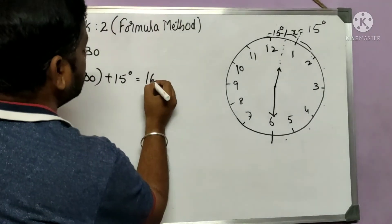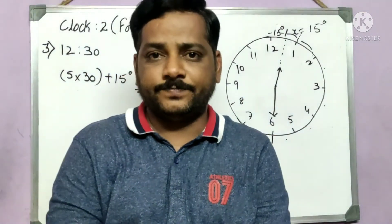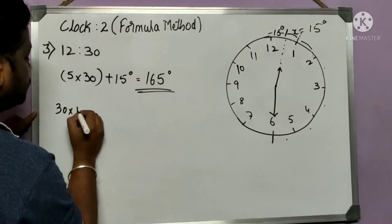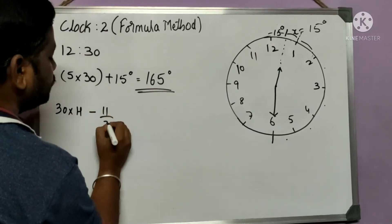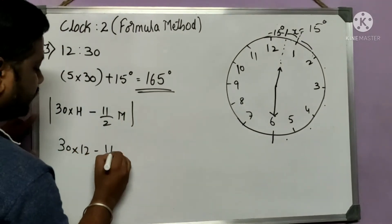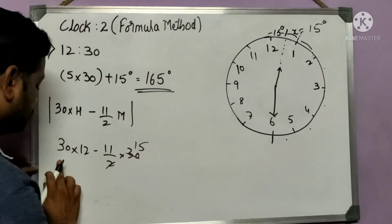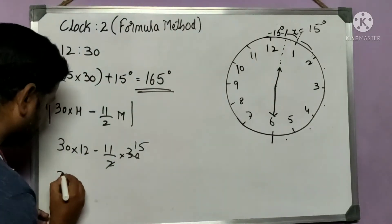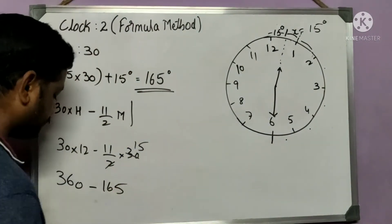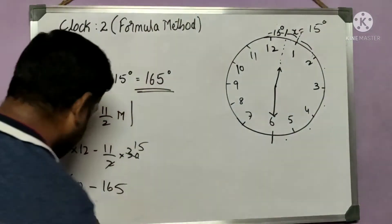So the traditional method gives: 150 + 15 = 165 degrees. Now applying the formula: 30 × 12 − (11/2) × 30 = 360 − 165 = 195 degrees.